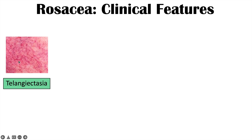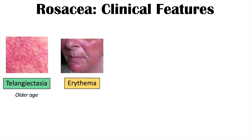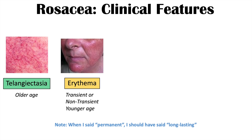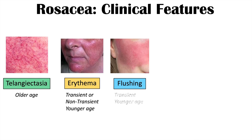With the erythematotelangiectatic subtype, we see telangiectasias — small dilated blood vessels often termed spider veins — more noted in older age. We can also see erythema, a reddening of the skin, which can be transient or non-transient, and is more common in younger age groups. Flushing — a transient reddening of the face — is also seen, typically in younger age groups.